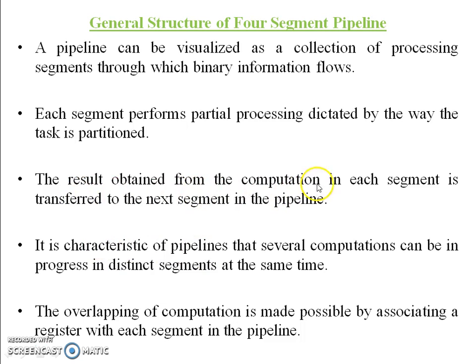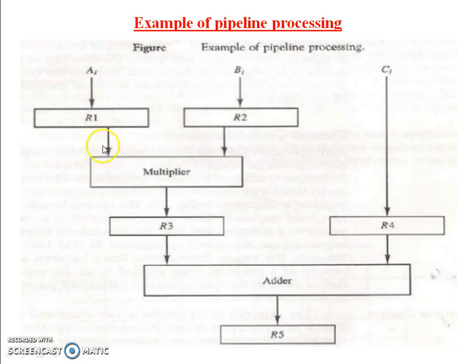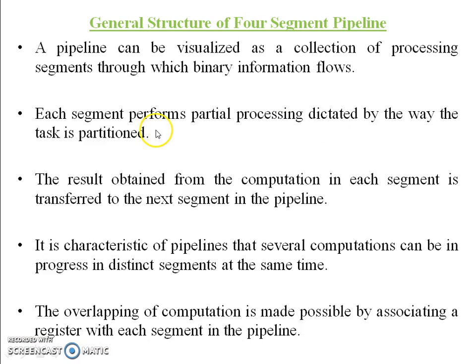The result obtained from the computation in each segment is transferred to the next segment in the pipeline. R1 and R2 first store A1 and B1. Multiplication R1 * R2 is stored in R3. At that time, R1 and R2 take another input, A2 and B2. So the process goes on simultaneously. Several computations can be in progress in distinct segments at the same time.